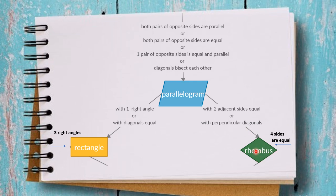Now it's time to know how to prove a rhombus. Building the map for a rhombus, we can start with a parallelogram. A parallelogram is like an elongated rhombus because the adjacent sides are not equal. If we prove it is a parallelogram and add that two adjacent sides are equal, it is a rhombus. Or if it is a parallelogram with perpendicular diagonals, it is a rhombus.